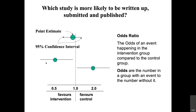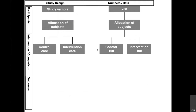Now I would like to move on to how we calculate odds ratio. Whenever you are extracting data for any type of systematic review, you should try to understand what type of analyses are possible for your question, and from that you can figure out what type of data you will need to extract from papers.